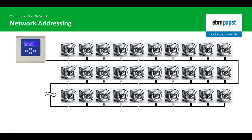When initializing a new communication network of EBM PAPST electronically commutated fans, the MDC identifies each fan individually by its serial number. It searches the network for the fan with the earliest serial number and assigns it to address 2. It then repeats this process, assigning each fan with an address in sequence until all fans in the network have been found.